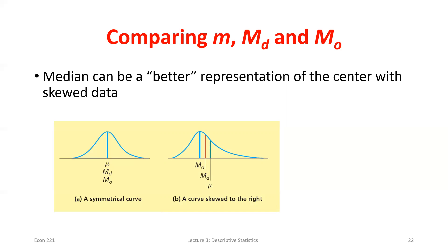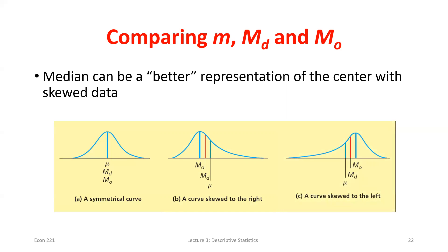The real reason we name distributions as right or left skewed is based on the relationship between mean and median: if mean > median, it's right-skewed; if mean = median, it's normal; if mean < median, it's left-skewed. Without any visual, just knowing the mean and median lets you determine the skewness.